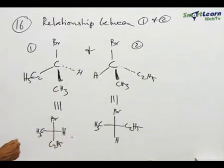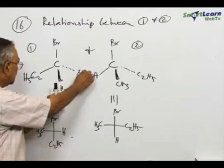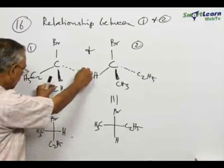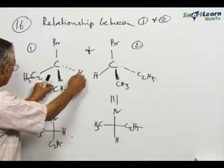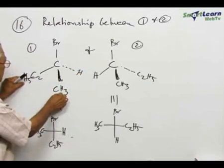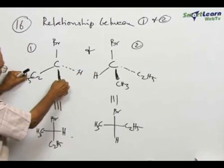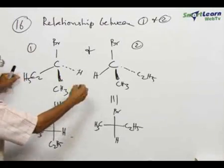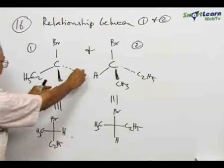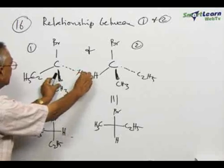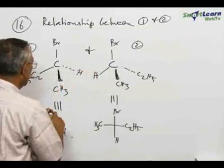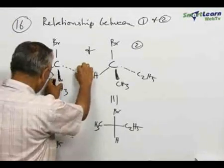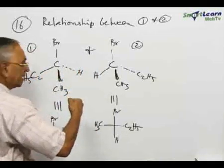How will you convert this wedge projection to a Newman projection? There is a very simple rule: two groups which are adjacent, for example these two groups, which are adjacent, are being pulled apart. So they come to the front. For example, this CH3 I am holding, assume I am holding the CH3 and H. I am trying to pull the two groups to the front.